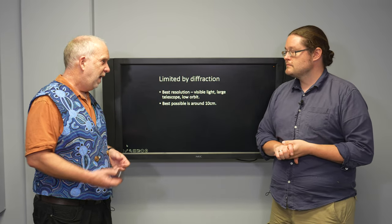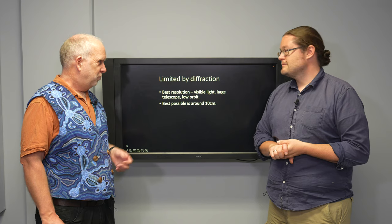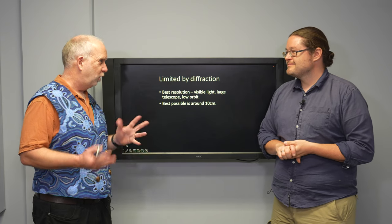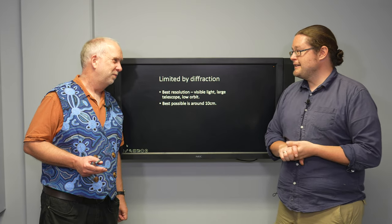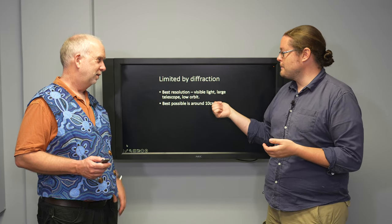So to get a really sharp image you need a very big telescope in the lowest orbit you can work at a short visible wavelength. And it turns out that for the American Keyhole satellites, which are more or less clones of the Hubble Space Telescope, they would have a resolution of about 10 centimeters.